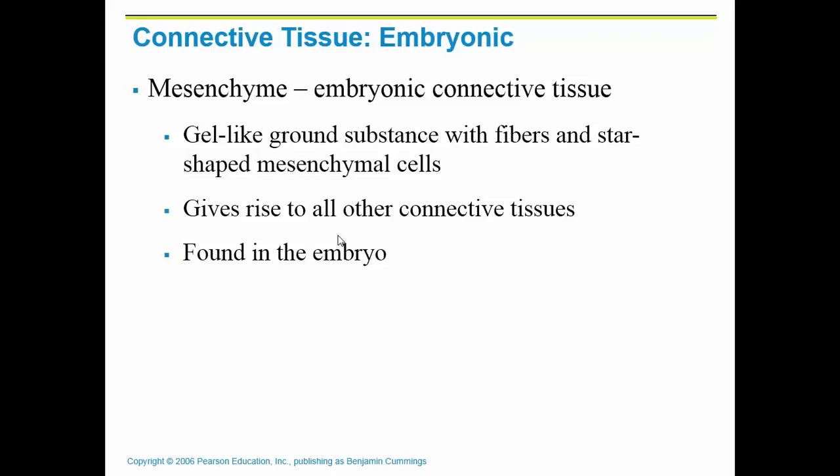Going back to that original diagram: mesenchyme is the embryonic connective tissue. When we were developing in our mother's womb, we were basically full of stem cells, and those stem cells start to differentiate and get a job, becoming other types of cells that then develop into adult cells. So mesenchyme is the embryonic connective tissue cell that gives rise to all of the other types of connective tissue.